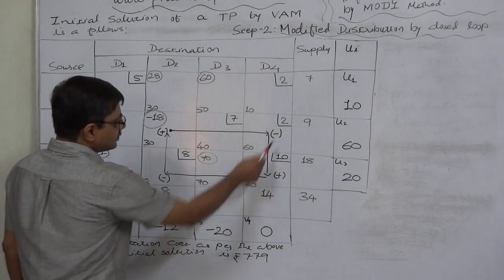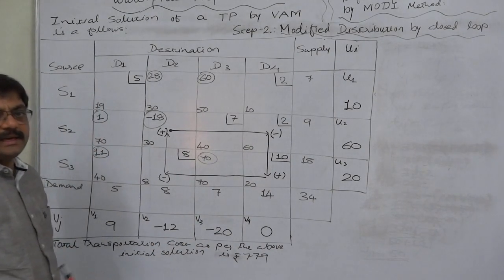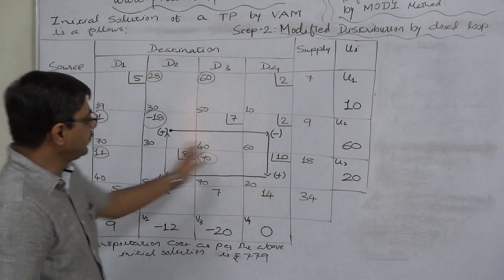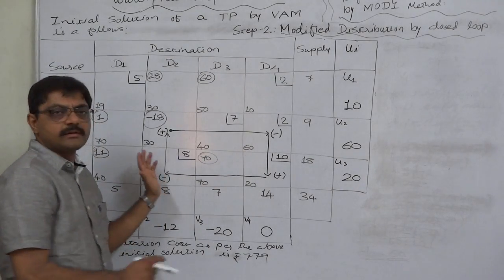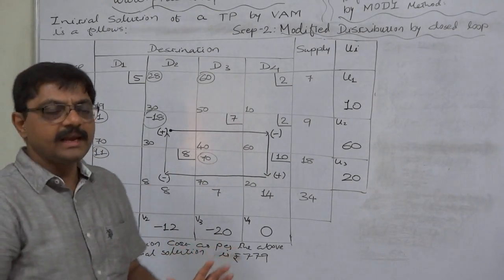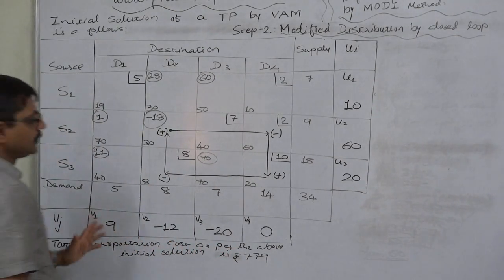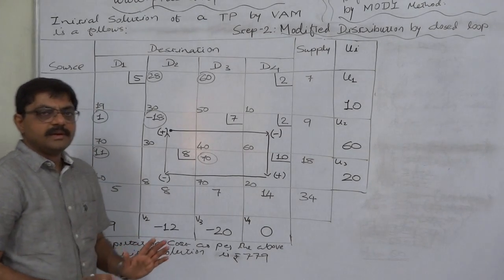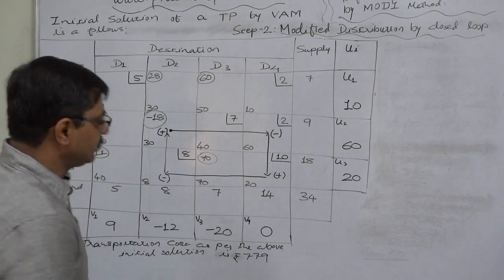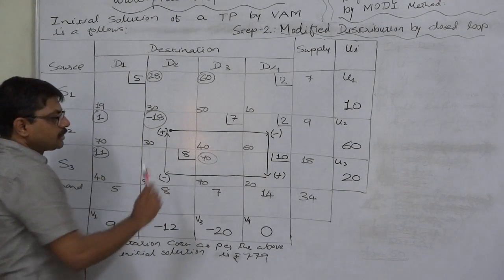Observe the closed loop carefully: the signs alternate as plus, minus, plus, minus. There must be equal numbers of plus and minus signs — here there are two plus signs and two minus signs. Note that the loop does not need to be a rectangle or square; a variety of shapes are possible.